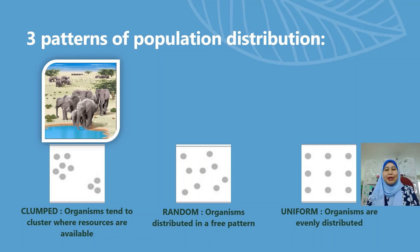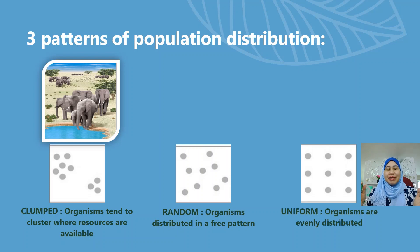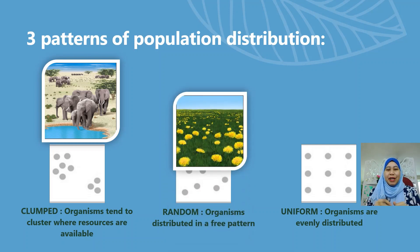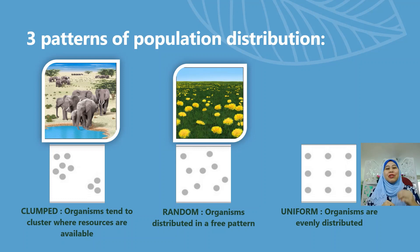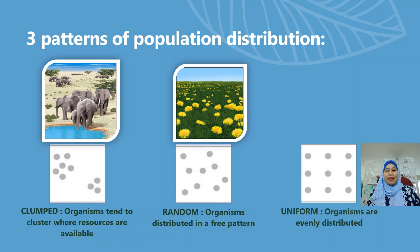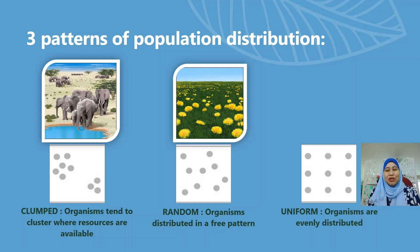Next is random. Random is where organisms are distributed in a free pattern — there is no specific pattern. For example, you can see in the picture the population of dandelions spread all over the field. That is called the random pattern of population distribution.